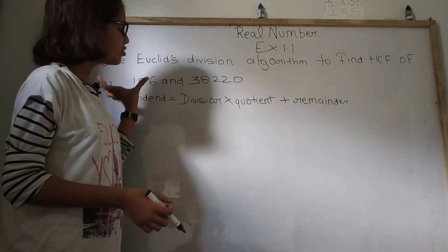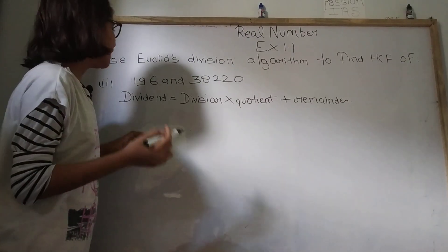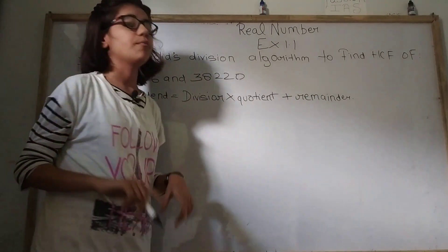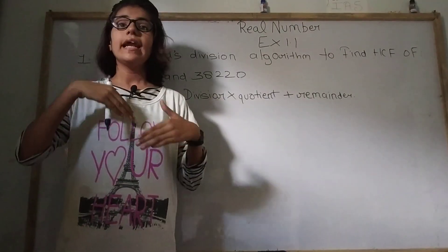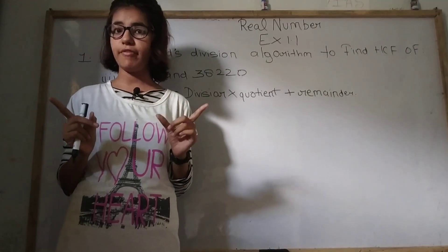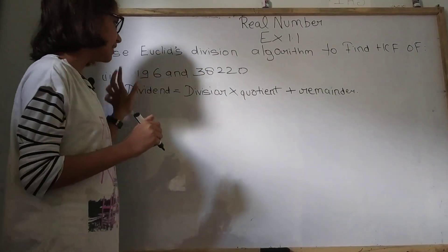So in my first video I told question number first how to solve that. So it is also based on same process. So if you haven't watched the video let me tell once again that Euclid division algorithm, what does it mean? It means that it is a technique to find the HCF, means highest common factor of two given numbers and our numbers are given.